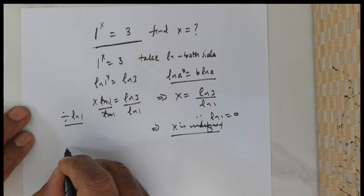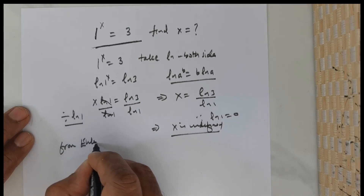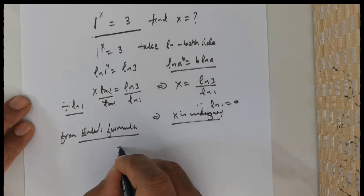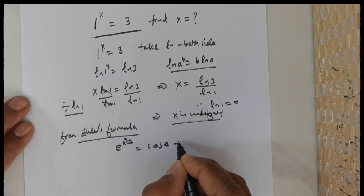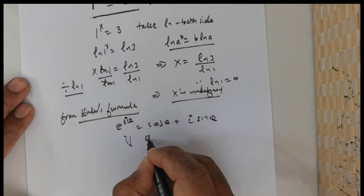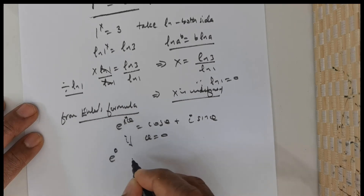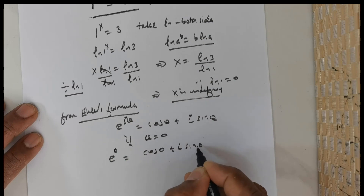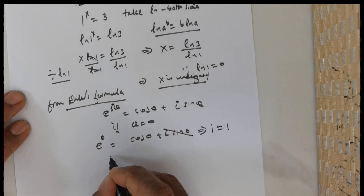So I am going to adopt this approach. Now from Euler's formula, we know that e raised to the power of i theta is equal to cos theta plus i times sin theta. Now if theta is equal to 0, then e raised to the power of i times 0 is equal to cos 0 plus i times sin 0. This will give me 1 is equal to 1.